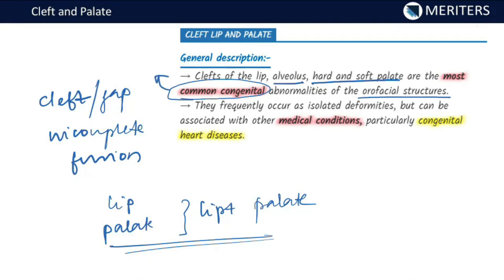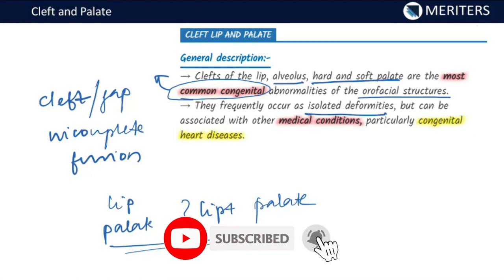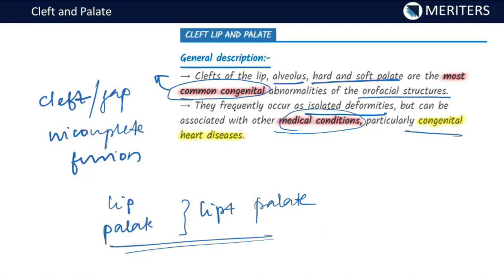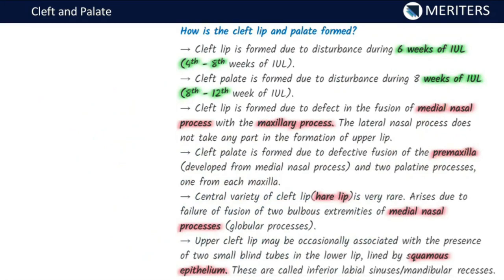They are congenital — present by birth. They frequently occur as isolated deformities but can be associated with other medical conditions or syndromes, like congenital heart diseases. So they are developmental or congenital, the most common abnormalities of the oral facial structures, occurring either in isolation or superimposed with other conditions.